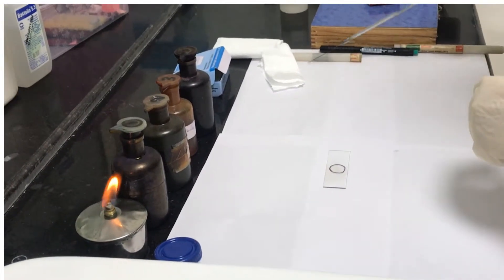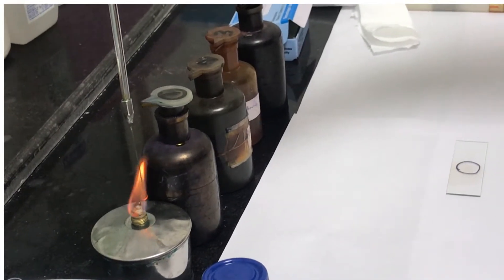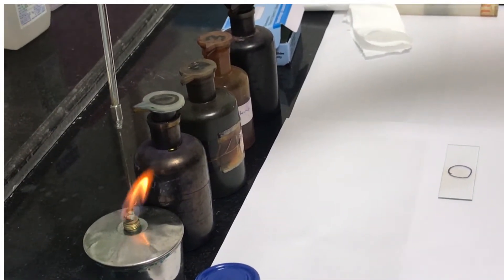Take the inoculating loop and sterilize it by making it red hot in the Bunsen flame and let it cool.